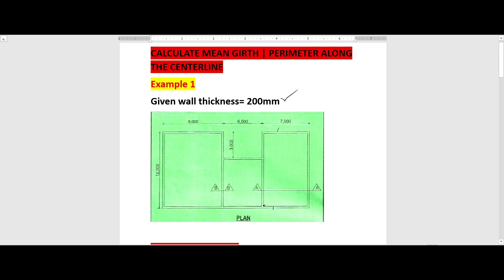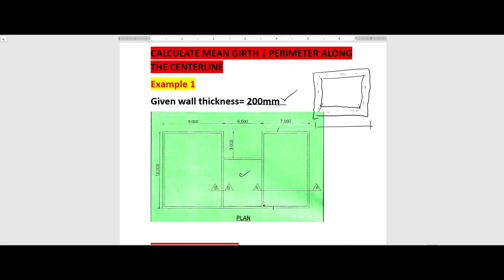We've been given the wall thickness to be 200. When we are talking about the perimeter along the center line, if that is the plan and that is the wall, we need to calculate the perimeter along that center line. From here up to here is the external dimension; from here up to here is the internal dimension. This is going to be our thickness of the wall.